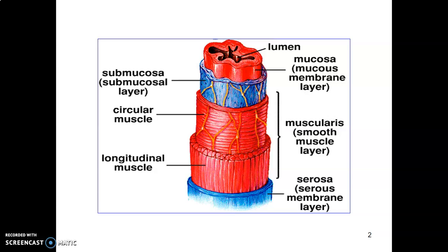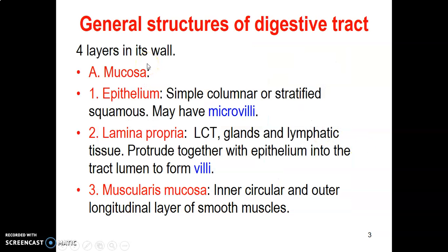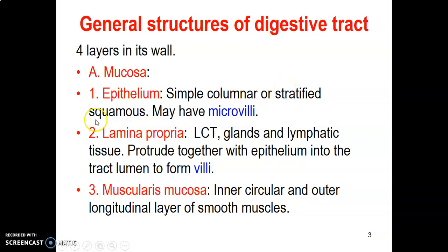That's the general structure of the GI. Now, how do you describe the mucosa? The mucosa of the GI contains epithelium. In the hollow GI, most of it is simple columnar, but a few places like the esophagus and the anal canal have stratified squamous epithelium. The oral cavity, oral pharynx, esophagus, and anal canal have stratified squamous, but the other hollow GI is simple columnar. There may also be microvilli, like in the small intestines and the gallbladder.